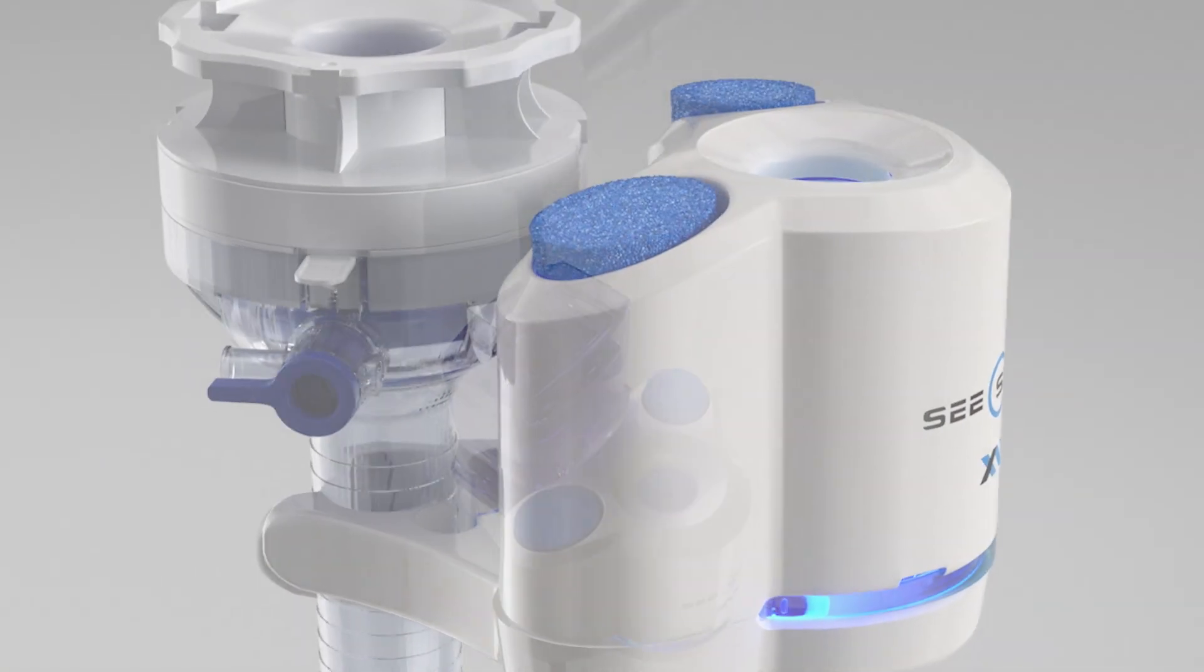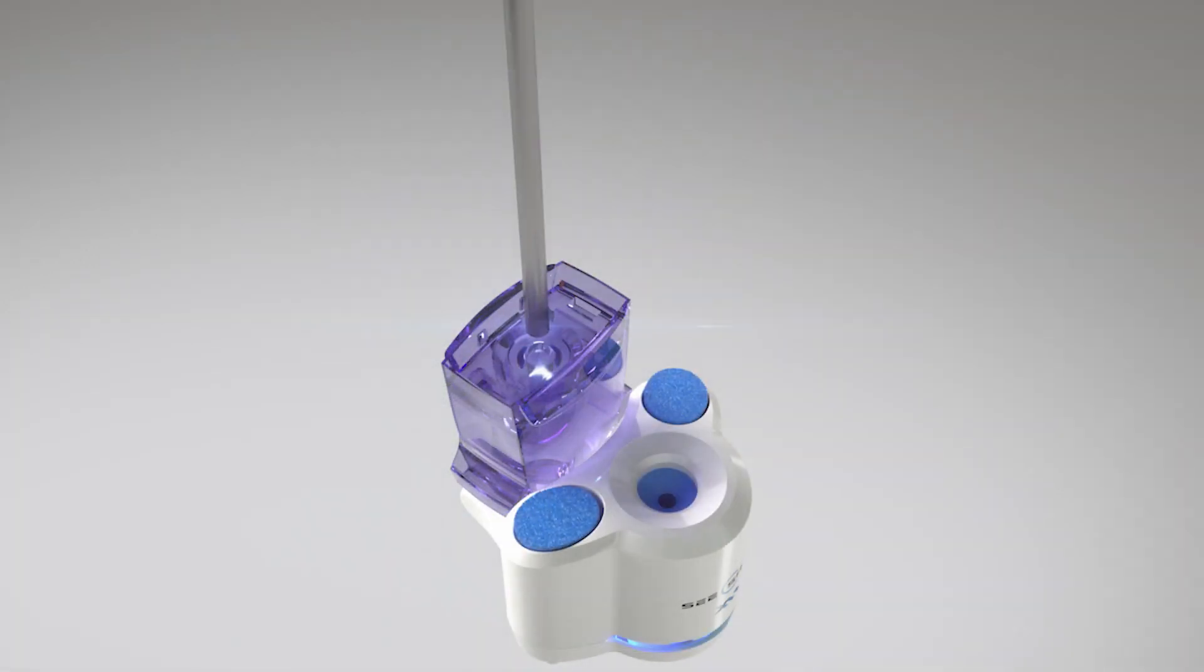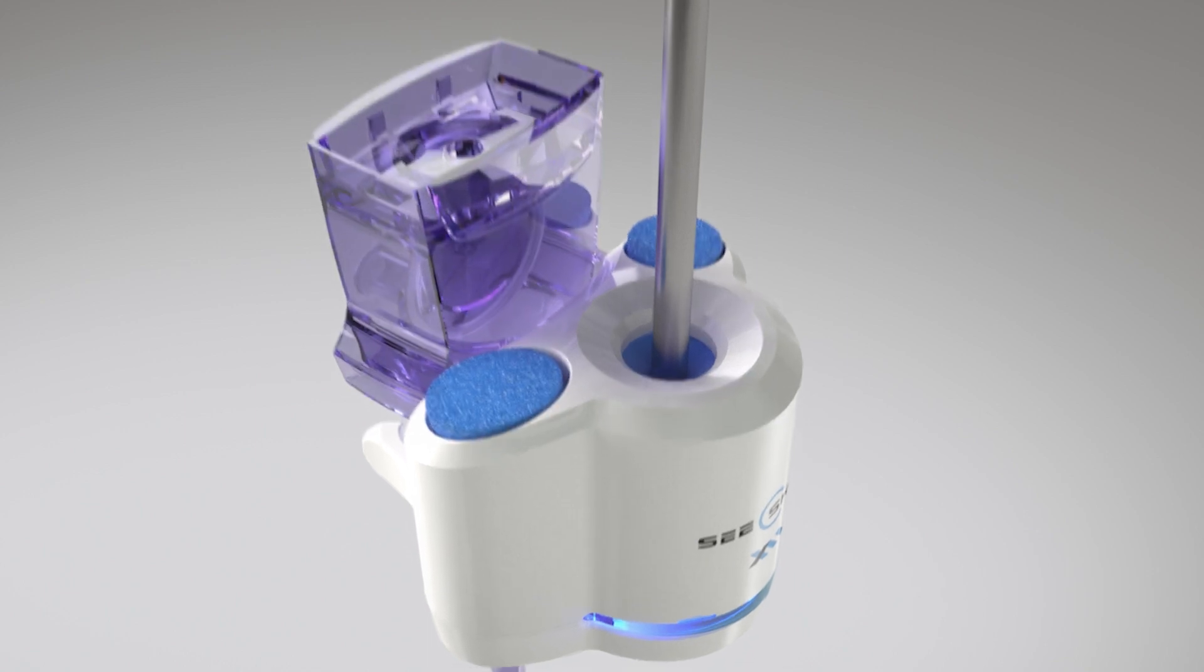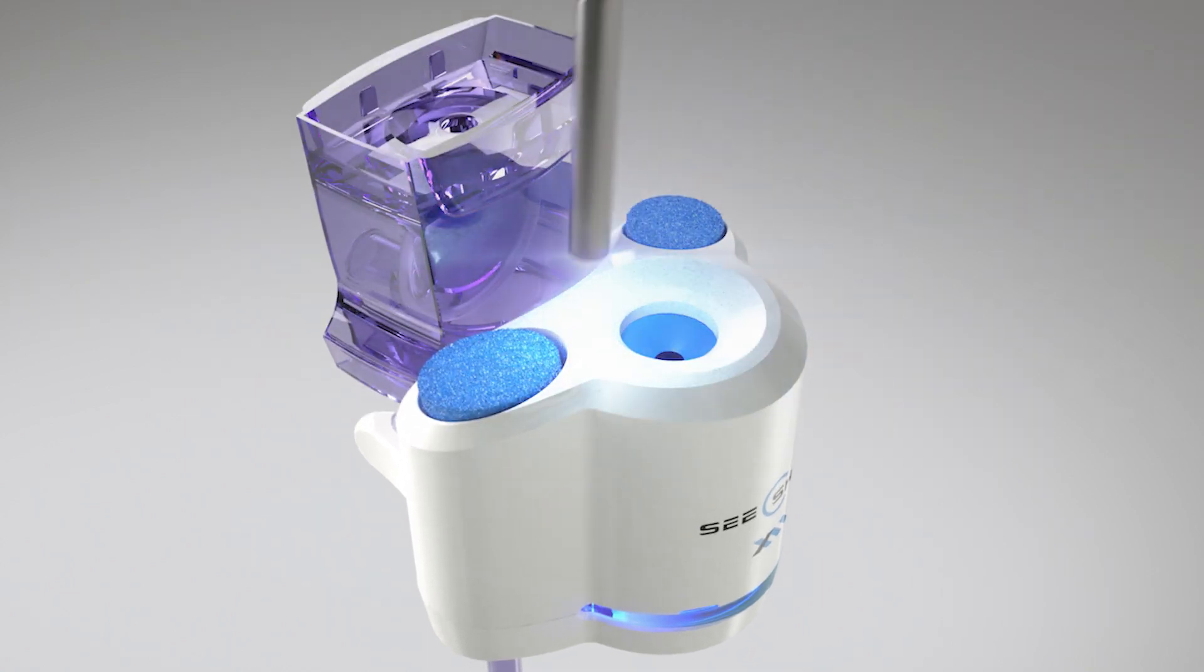When attached directly to a trocar, the C-Sharp enhances control and efficiency by allowing the clinician to retract a laparoscope, clean, defog, and return it to service in one streamlined process.